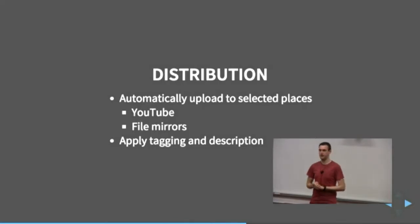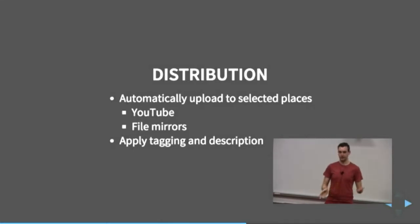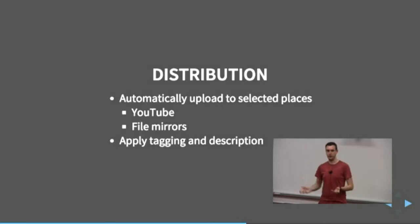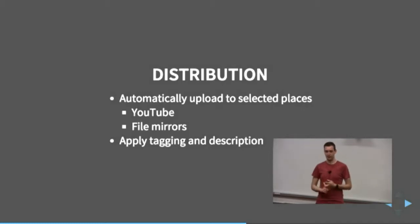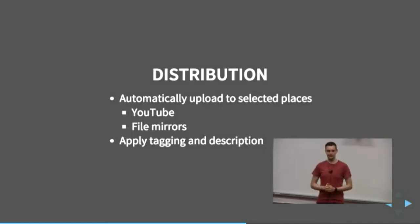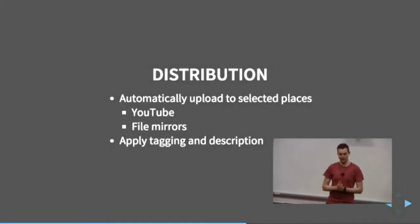For distribution, we need to be able to upload videos to different places. At the moment we can upload fairly well from our PyCon system — it's a little script that watches for new files to appear in a directory, looks up stuff based on the file name, and uploads it to YouTube. That works, but I'd like it to be a little bit better so I can see exactly what's being uploaded. I'd also like it so that rather than having to stick all the videos onto a USB drive and send them down to someone at Linux Australia to upload to the mirror, it just goes there automatically.